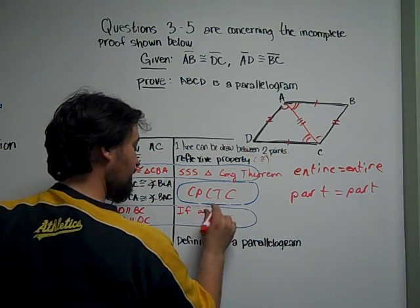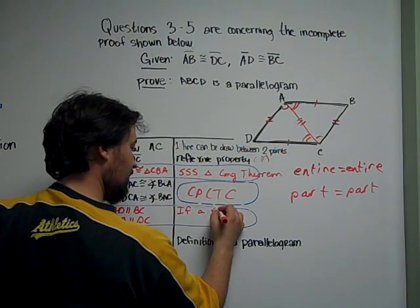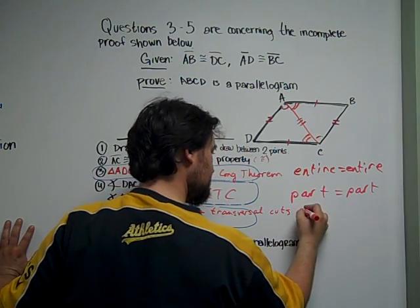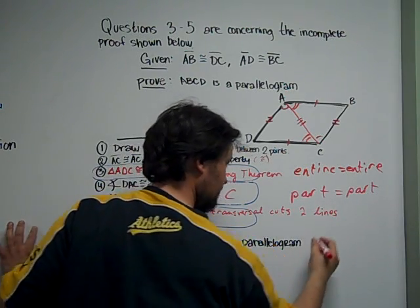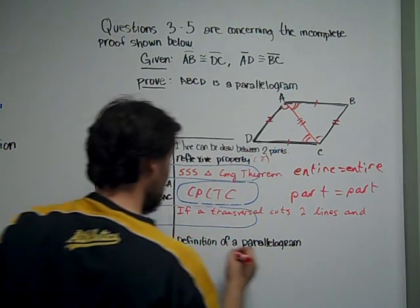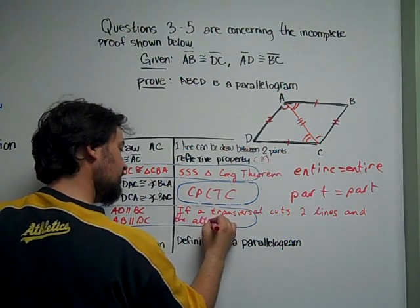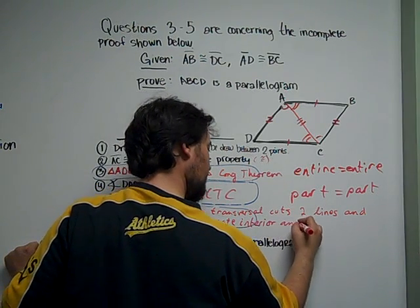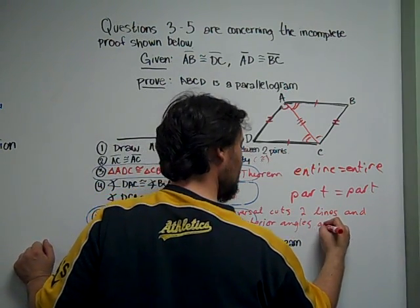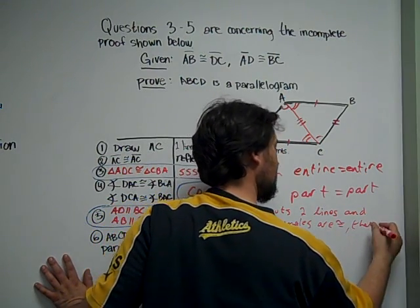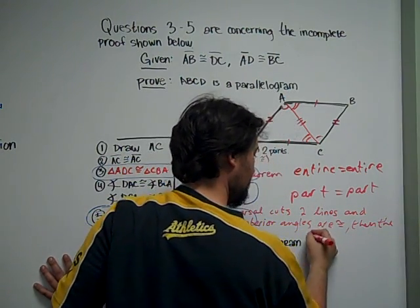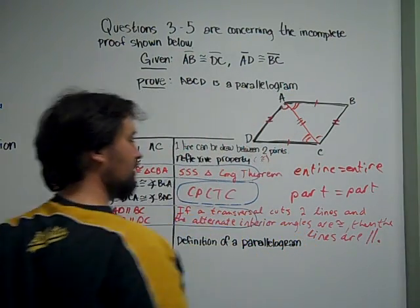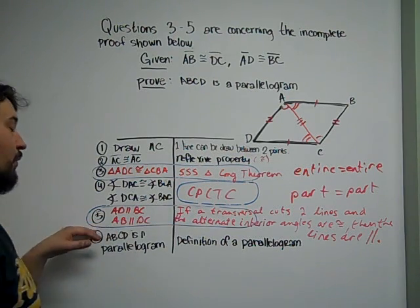Now, if a transversal cuts two lines and the alternate interior angles are congruent, then the lines are parallel. And that will be the true definition for this.